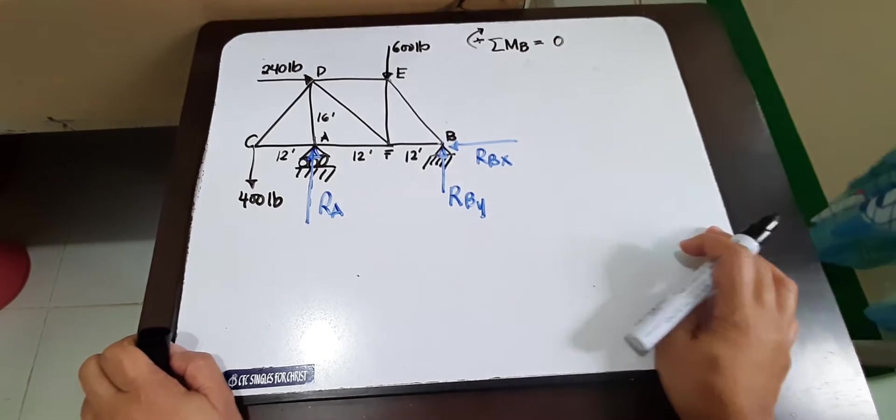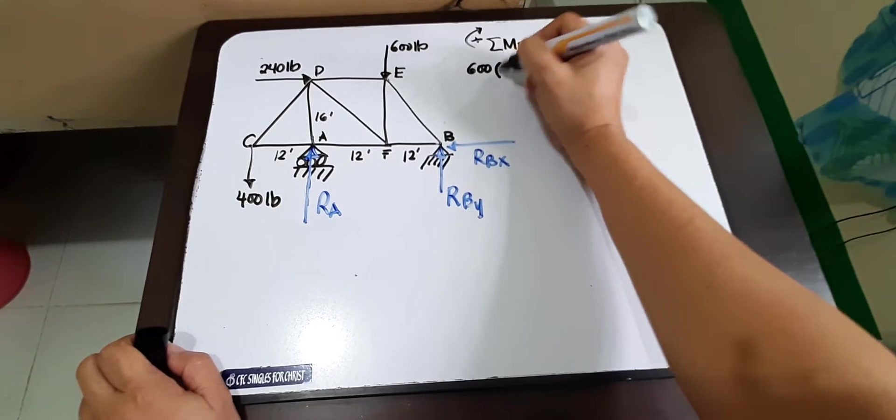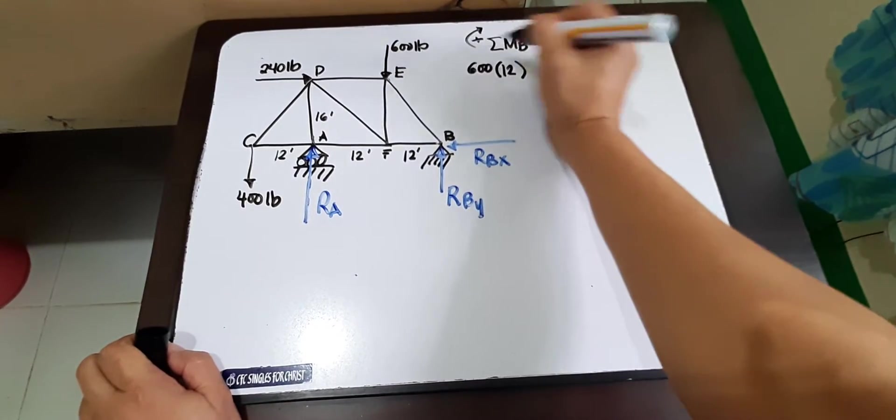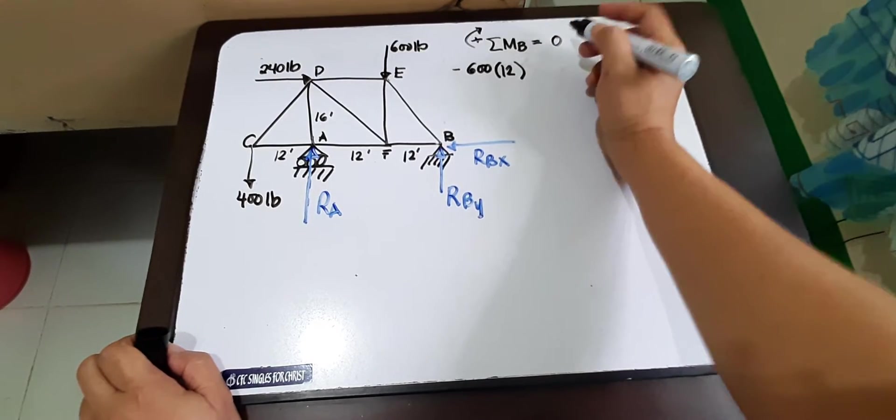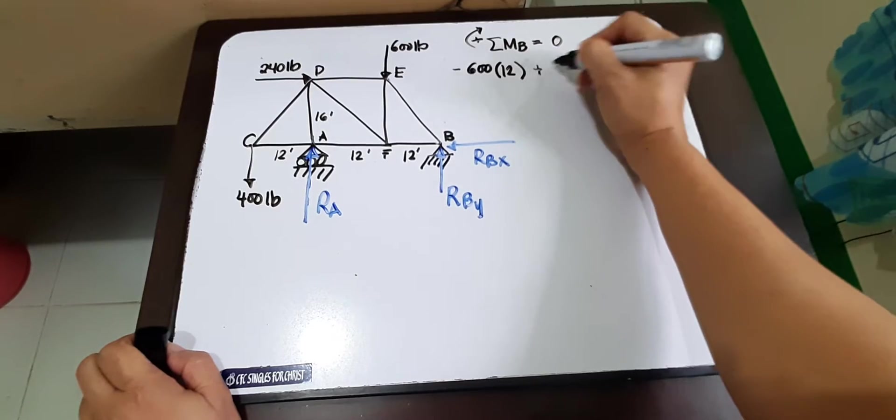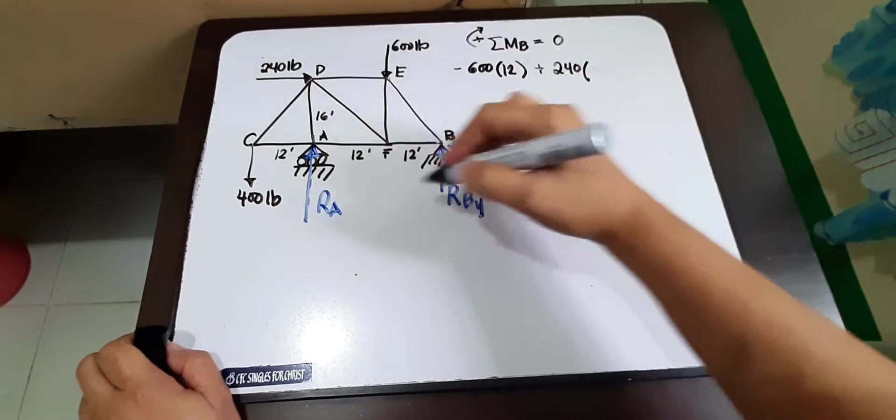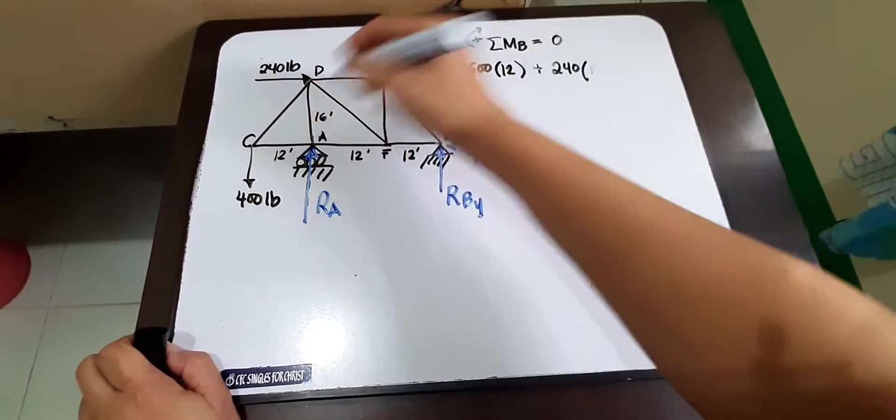So we will have 600 multiplied by 12, and that will create a negative, a counterclockwise direction. And then we have 240, that's a plus, so it will create a clockwise direction. 240 multiplied by moment arm 16.